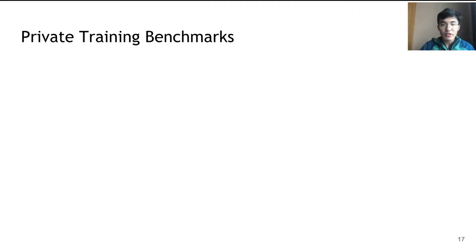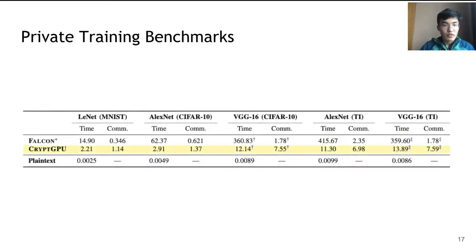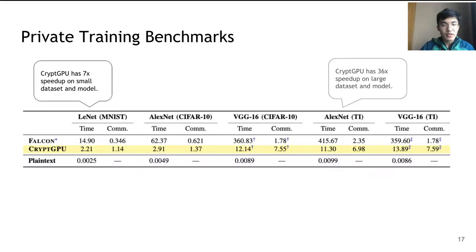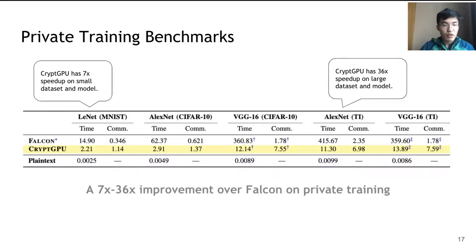For private training, we compare with the state-of-the-art Falcon. On small datasets and models, CryptGPU achieves a 7x speedup, and on large datasets and models such as AlexNet on Tiny ImageNet, CryptGPU achieves a 36x speedup. Overall, we see a 7x to 36x improvement over Falcon on private training.